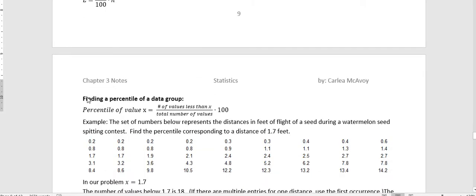So here's the first one, find a percentile of a data group. And to find the percentile, you take the number of values less than the X that you're talking about, and divide by the total number of values times 100. So here it says the set of numbers below represents the distances in feet of flight of a seed during a watermelon seed spitting contest. Find the percentile corresponding to a distance of 1.7 feet.